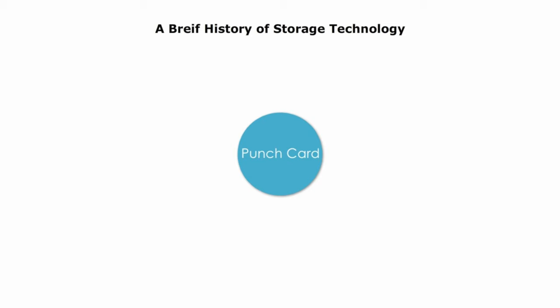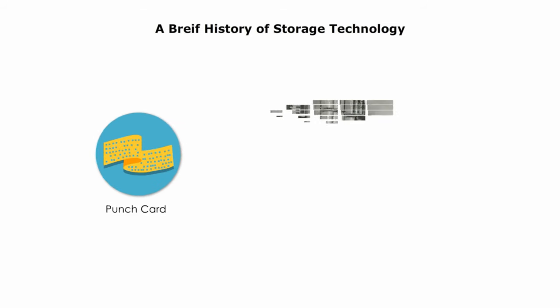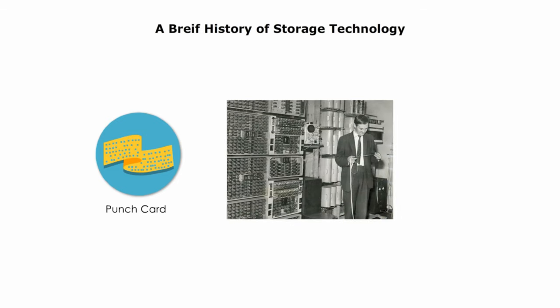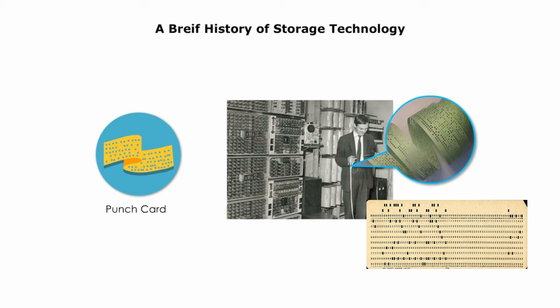Punch cards were a computer storage medium from the 1950s till 2012. A punch card is a piece of card stock that stores digital data using punched holes. A standard IBM punch card has 80 columns and 12 rows. A punch card could store approximately 6,400 bits of information, or 800 bytes.